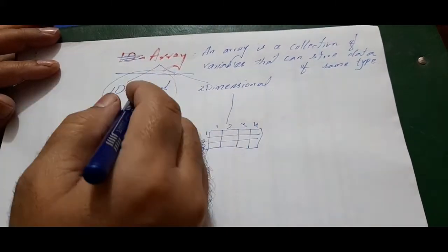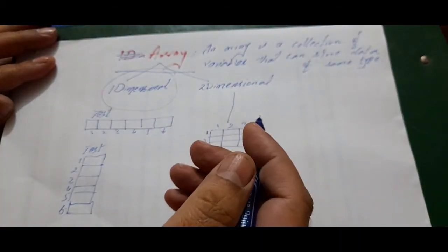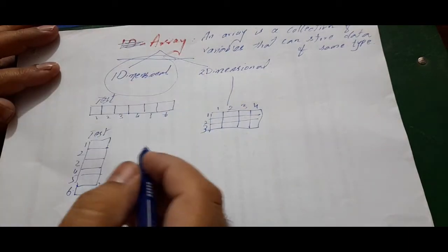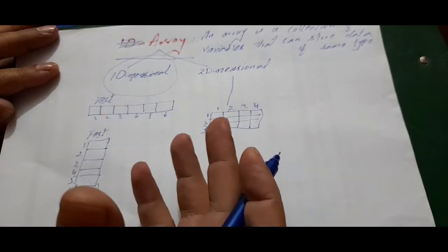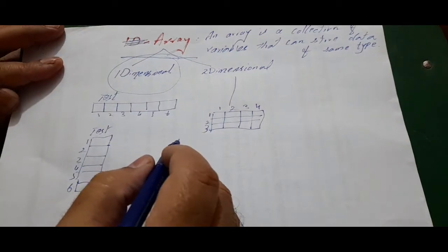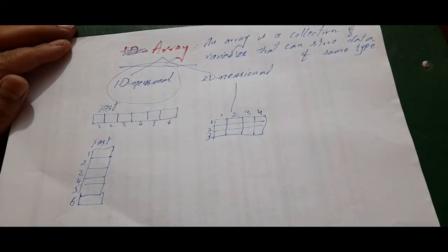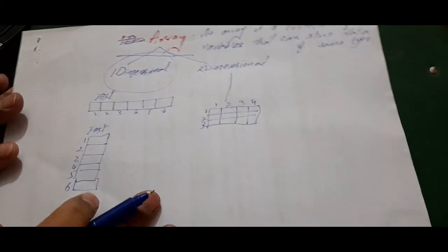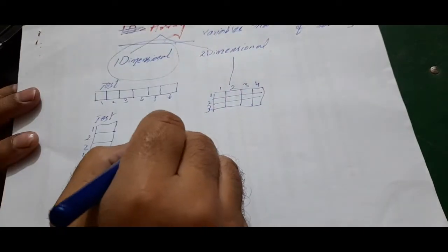At the moment we will discuss the single-dimensional array. An array is a collection of variables that can store data of the same type, but it can work for many variables — all of which must be of the same type. Here is a scenario: a class of 20 students has taken a test and we need to store the marks of all students for that test so we can reuse them. We need to record 20 different marks in a single-dimension array. First, we need to declare the array.